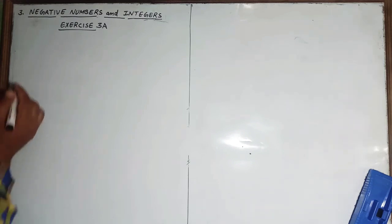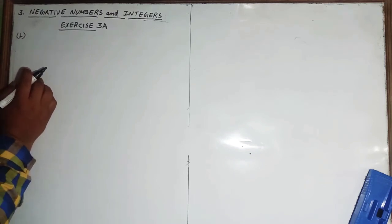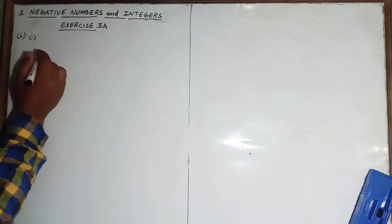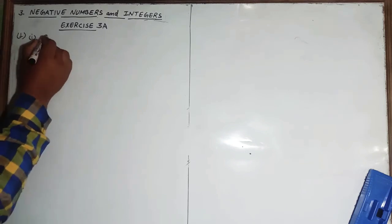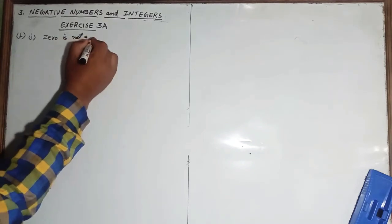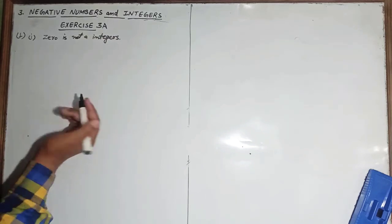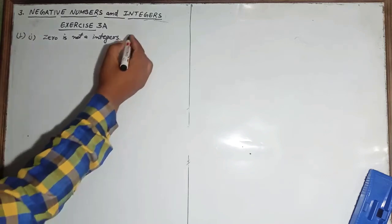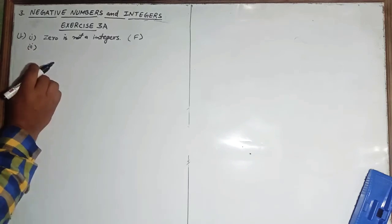Come to question number one: write true or false for the following statements. First statement is: 'Zero is not an integer as it is neither positive nor negative.' As we know, all positive numbers and negative numbers including zero are integers, so this is a false statement.